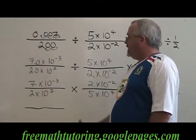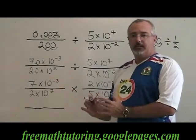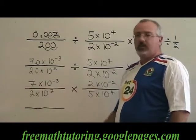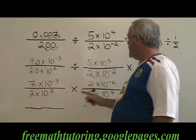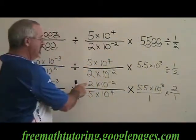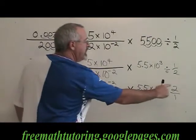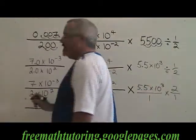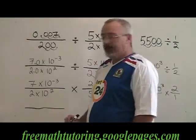Now it's time for us to combine the terms. We're going to start with the constant terms in the numerator. We have 7 times 2 times 5.5 times 2. When you multiply those out, you get 154.